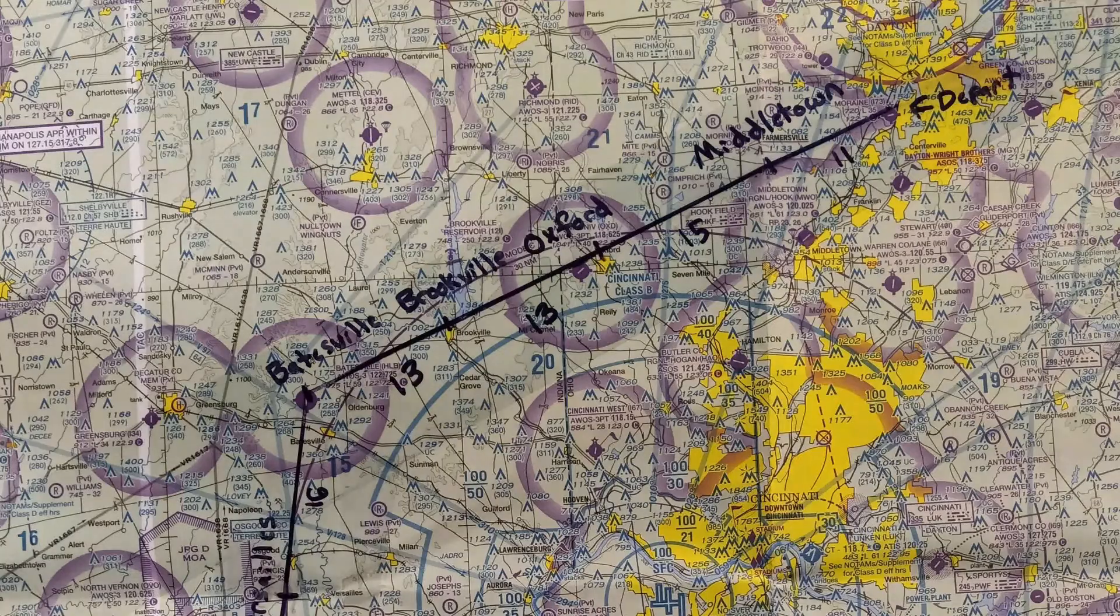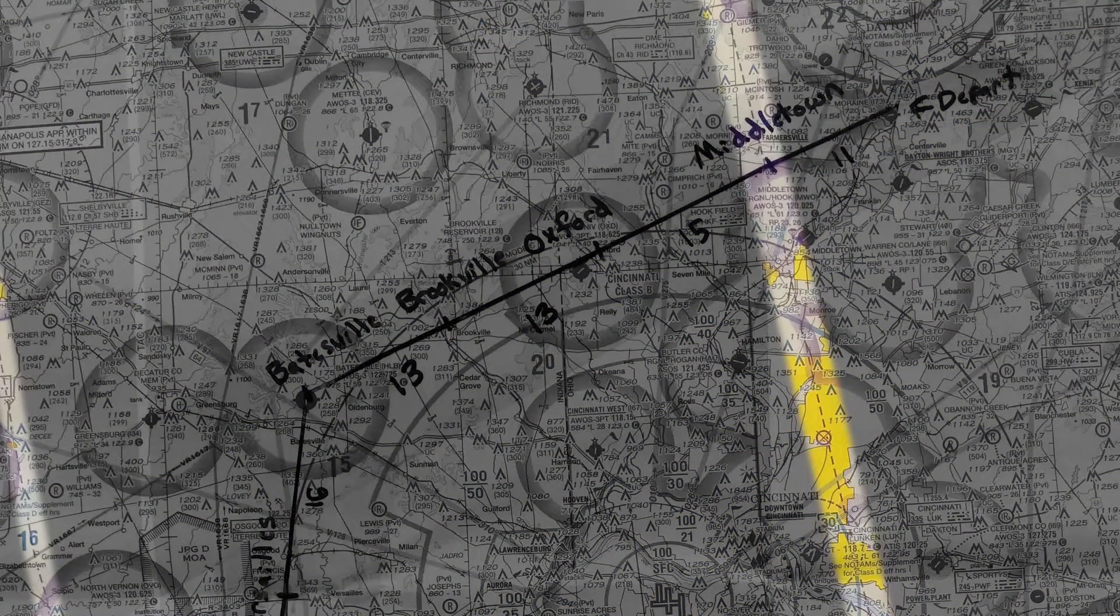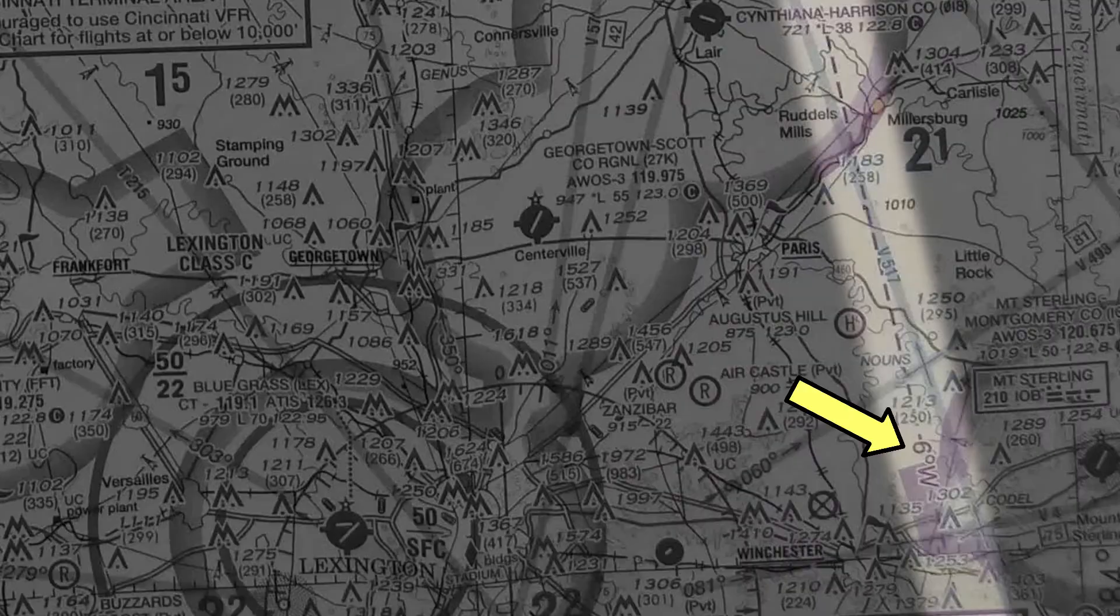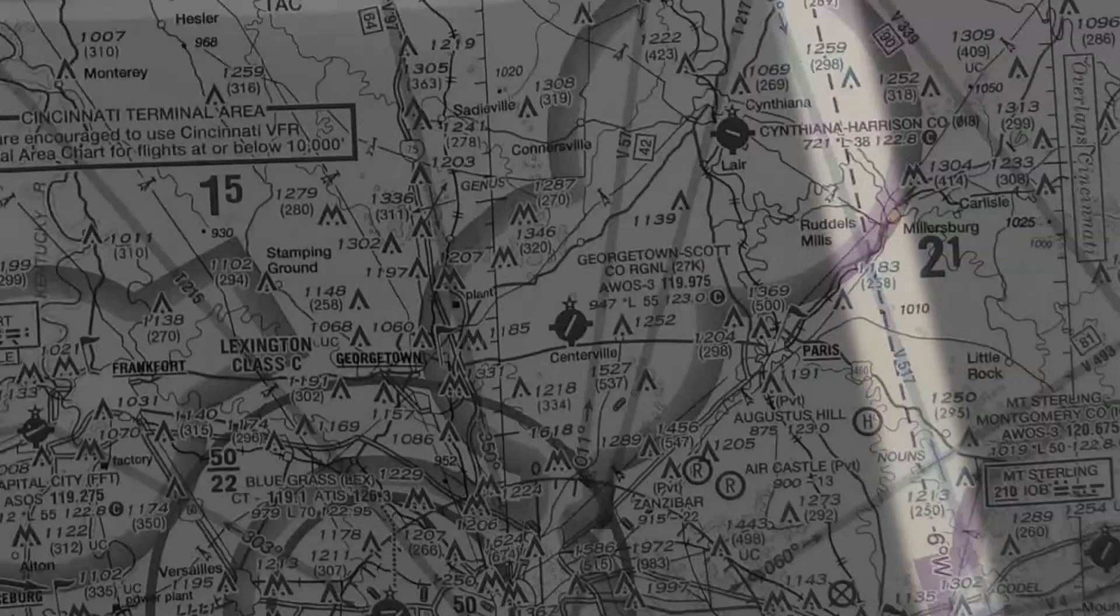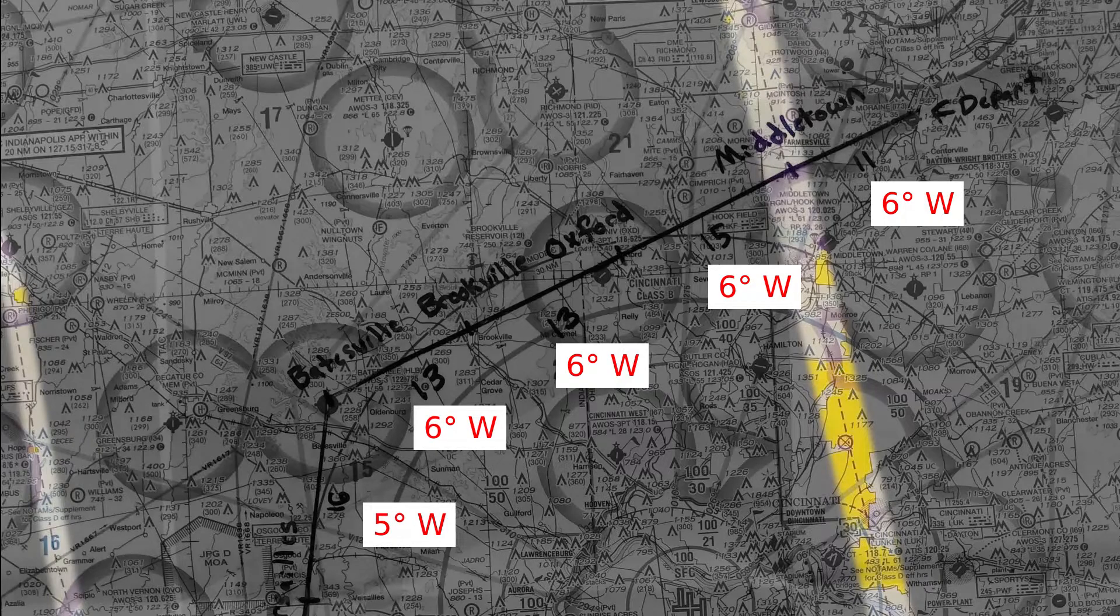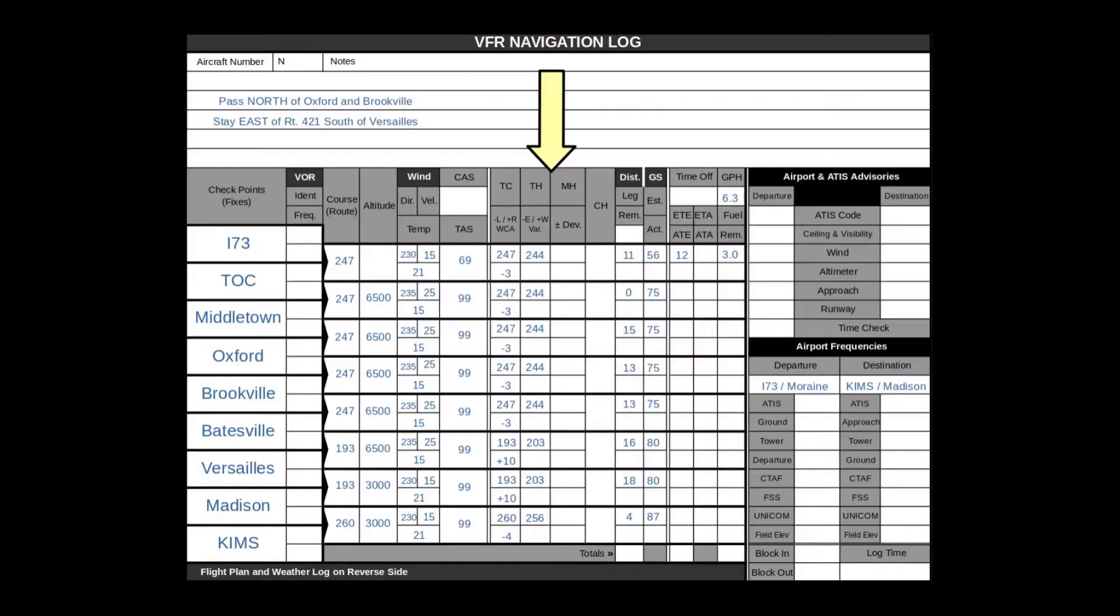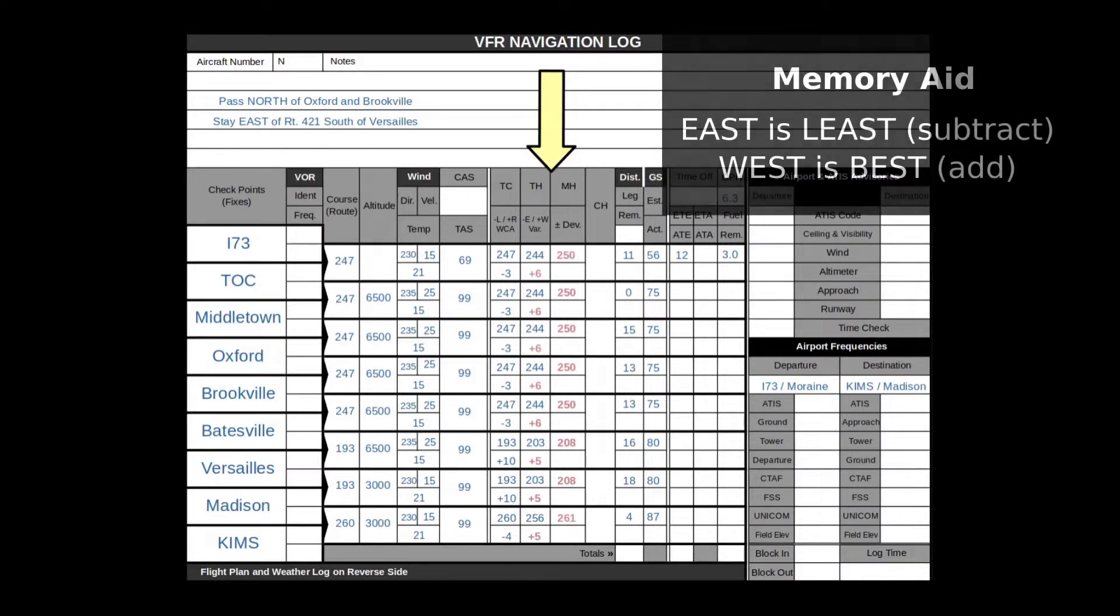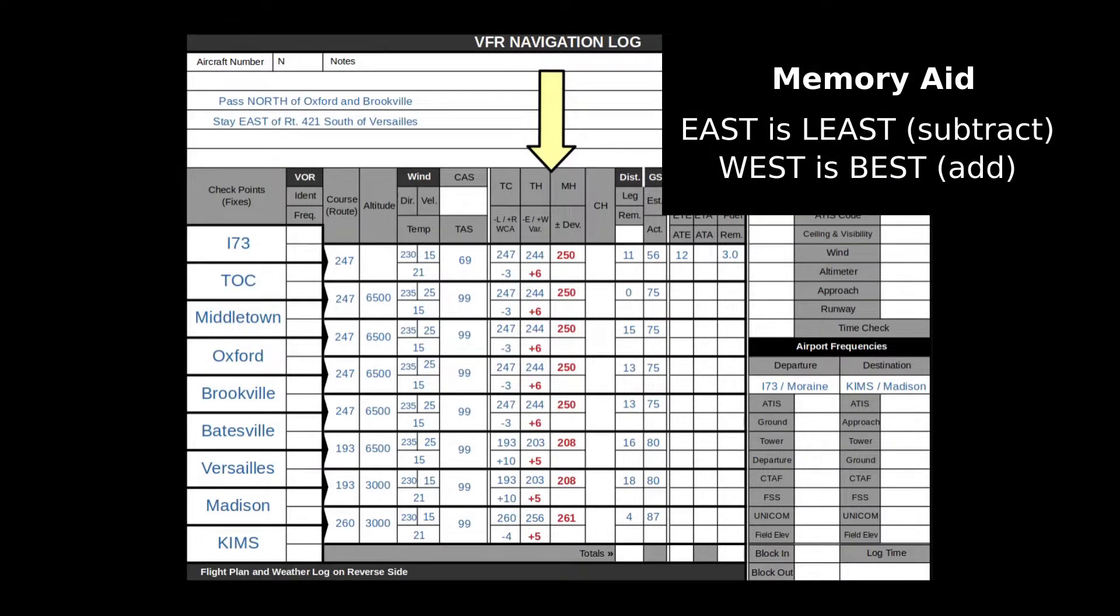Magnetic variation is depicted on the sectional by purple dashed lines. The variation is printed as degrees east or degrees west somewhere along the line. For each leg, figure out which magnetic variation it's closest to and write the corresponding value into the nav log. Compute the magnetic heading by adding westerly variation or subtracting easterly variation.